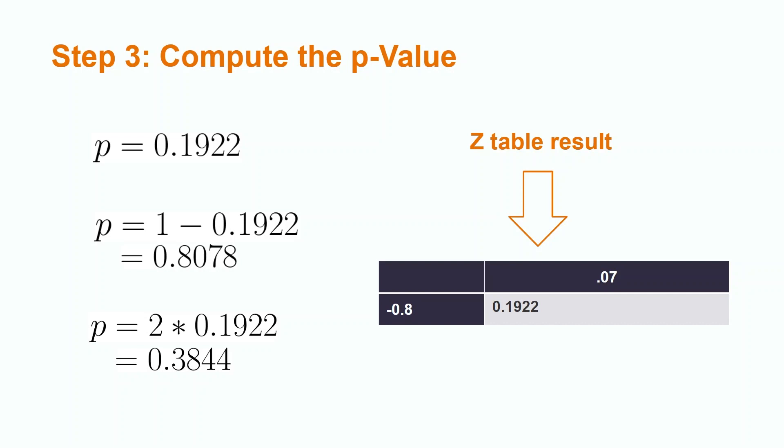In order to compute the p-value, we will use a z-table. To use a z-table, locate the ones and tens place of the test statistic in the column of the z-table and the hundredths place in the rows. How we compute our p-value will be dependent on our alternative hypothesis. For a left-tailed test, we just need to find our test statistic on the z-table and use its corresponding value. Using the z-test statistic from our example, we obtain a p-value of 0.1922.